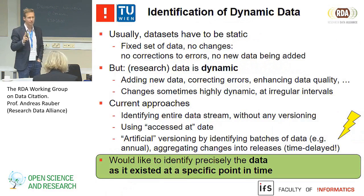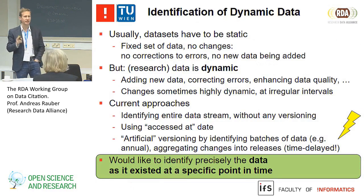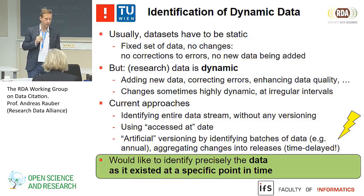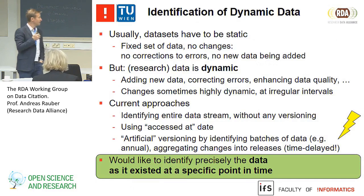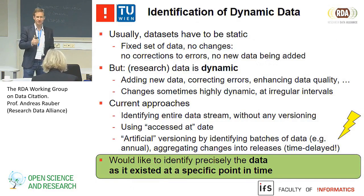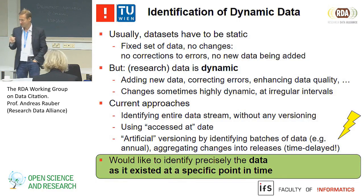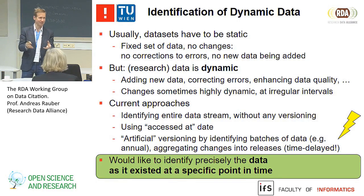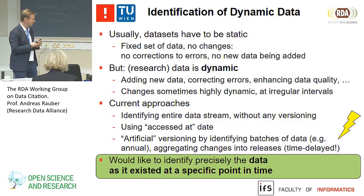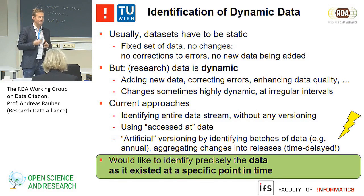Here are the two problems we set ourselves for the working group. In order to cite datasets, they need to be static—we heard this already this morning—you can only cite something reasonably and get back to it if it's static. But research data is dynamic.